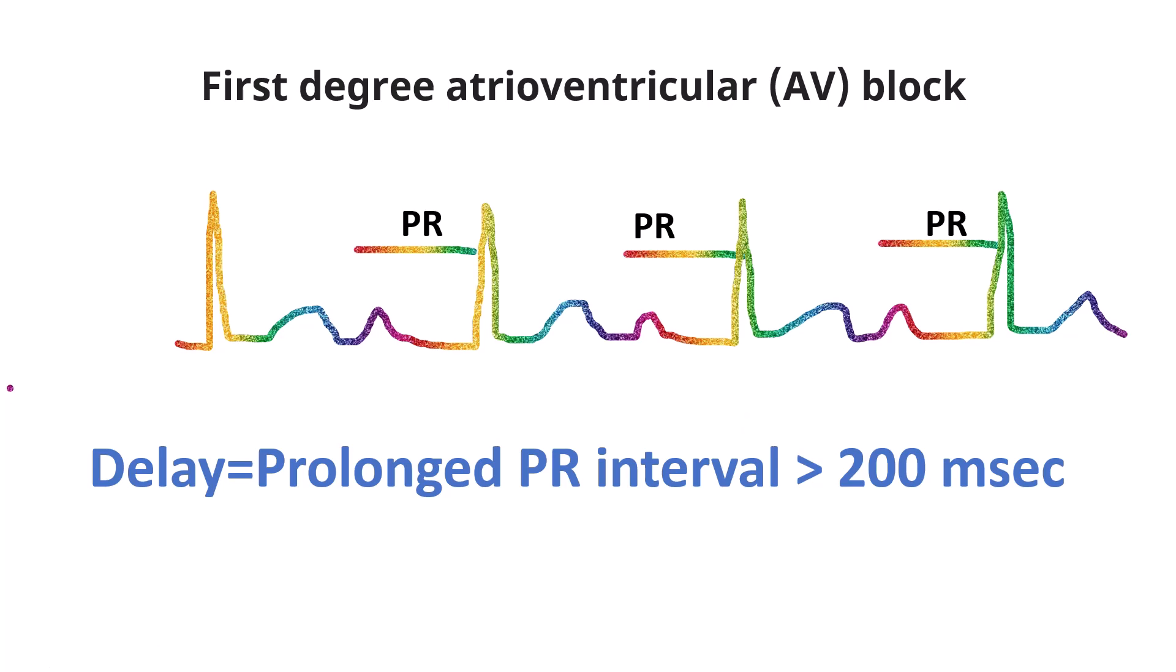First degree AV block is characterized by a P wave, usually sinus in origin, followed by a QRS complex with a uniformly prolonged PR interval greater than 200 milliseconds. A more precise term for first degree AV block is PR interval prolongation, because the signal is not actually blocked but rather is delayed.